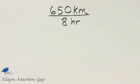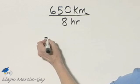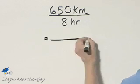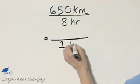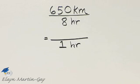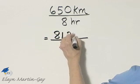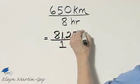I've already written it as a fraction, but I want to now write it so that in the denominator I have 1. To do so — I'll let you do this off to the side — you need to divide 8 into 650. And if you divide 8 into 650, you'll have 81 and 25 hundredths.